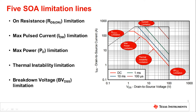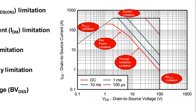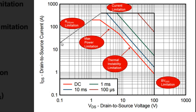Now that that's been discussed, let's revisit our SOA figure. The SOA can be divided into five separate boundaries. The first is the RDS-on limitation — this is where the amount of current you can push through the device is limited by the on-resistance at the maximum allowed junction temperature. You'll notice this line has a constant slope of one on this logarithmic curve, because every point on this line represents the same resistance — Ohm's law, R equals V divided by I.